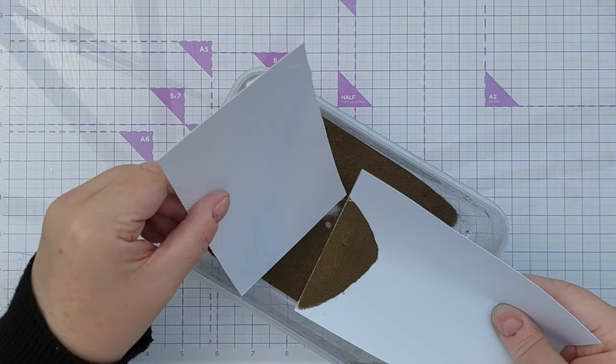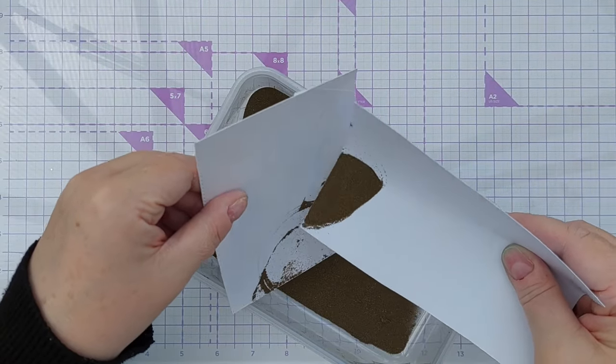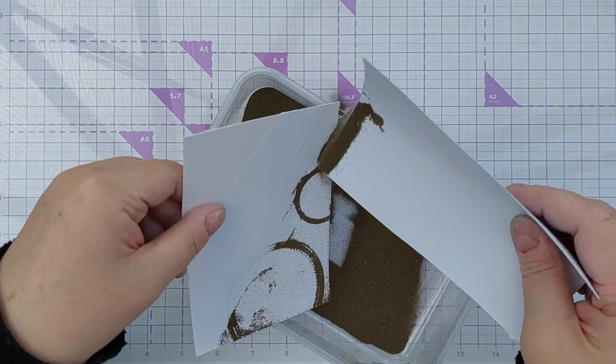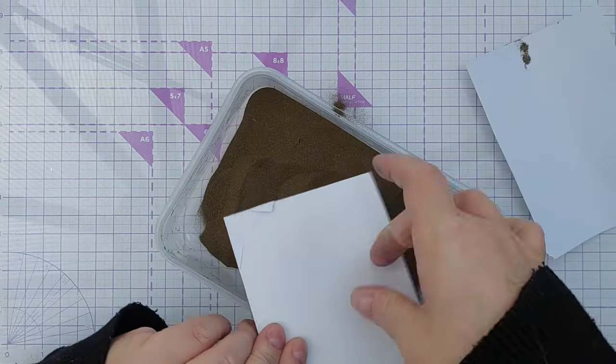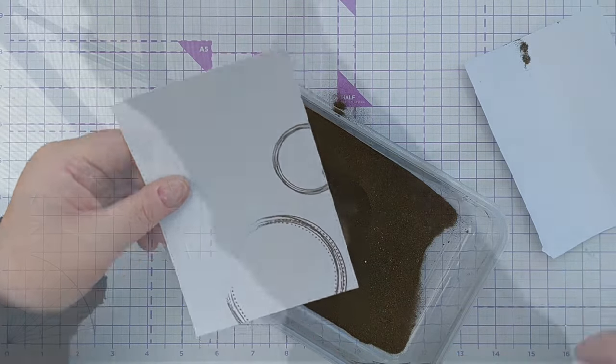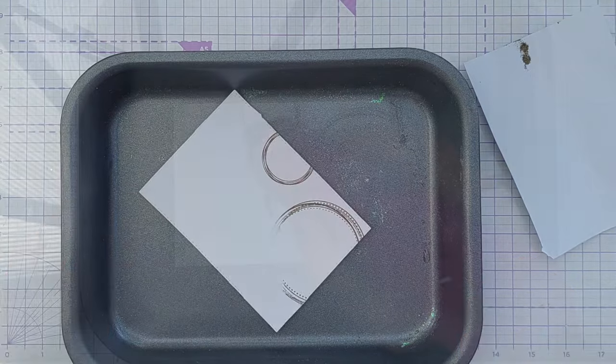I'm in the mood for a bit of bling today so I'm going to use my gold embossing powder. But instead of dipping it all the way in like I usually do, I'm just going to sprinkle it over so that I don't get loads on the masking paper. Now I'll heat that with my heat tool.